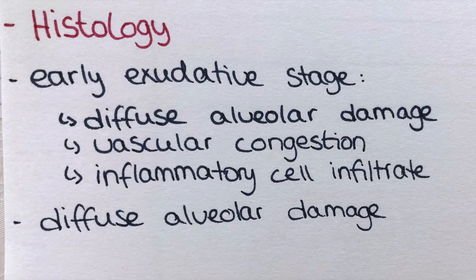There are also scattered type 2 pneumocytes with cytologic changes including multinucleation, cytomegaly, nucleomegaly, clearing of chromatin, and prominent nucleoli. After the infection, around 25% of all SARS patients have permanent lung damage in the form of fibrosis, with a tendency to improve slightly over time, but it often does not disappear completely.